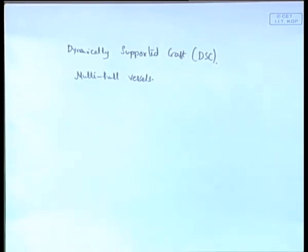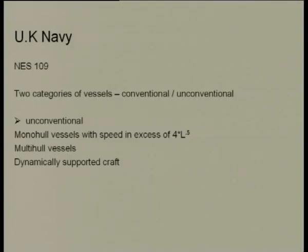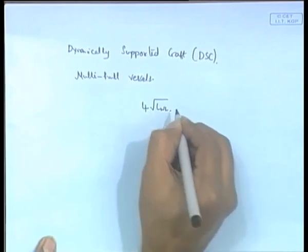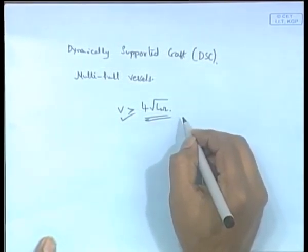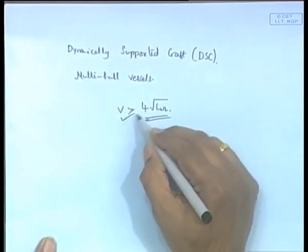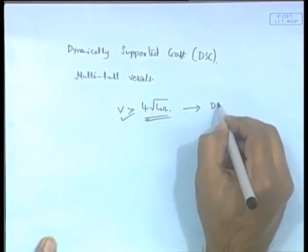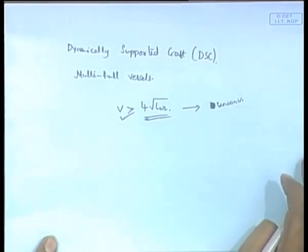Unconventional crafts in general include multi-hulled vessels and dynamically supported crafts. A dynamically supported craft can travel in two modes. Even vessels which have a speed in excess of 4 times root of LWL — where LWL is the length of the waterline — are categorized as unconventional crafts. So very high speed vessels also come under unconventional crafts, and the UK Navy has a series of regulations dealing with them.